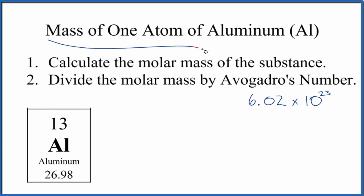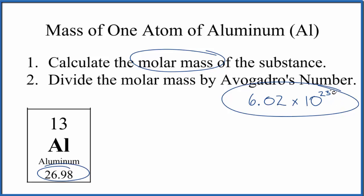Let's find the mass of one atom of aluminum, that's Al. Basically all we need to do is find the molar mass, or in this case since it's just an atom, the atomic mass that's right here on the periodic table, and divide that by Avogadro's number. That's going to give us the mass of one atom of aluminum.